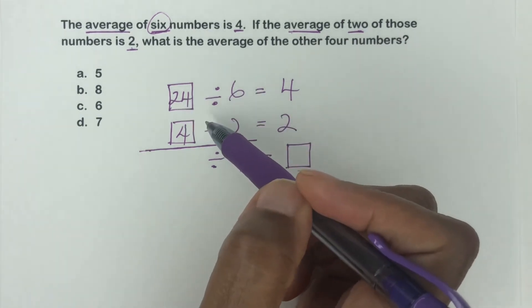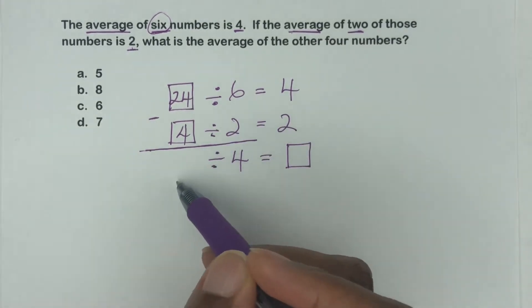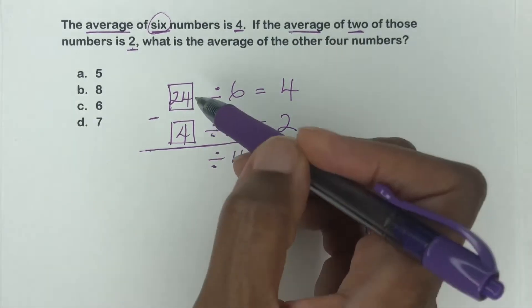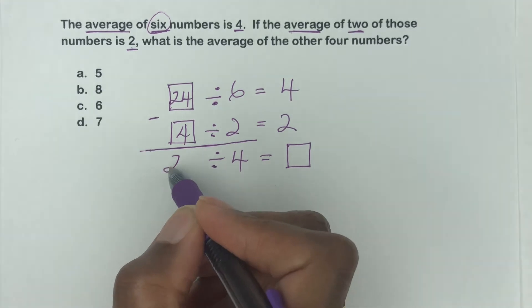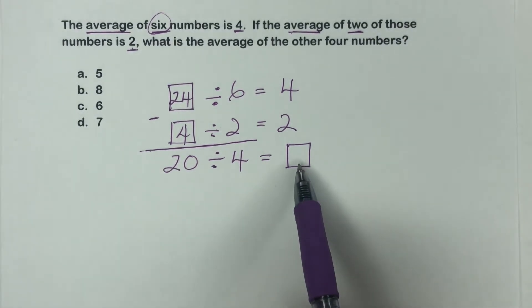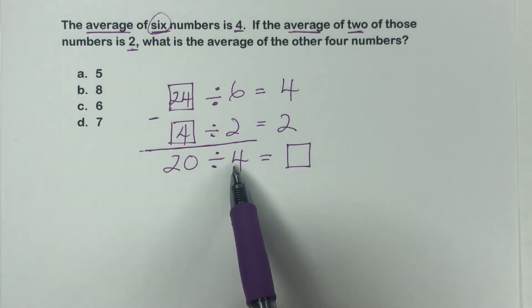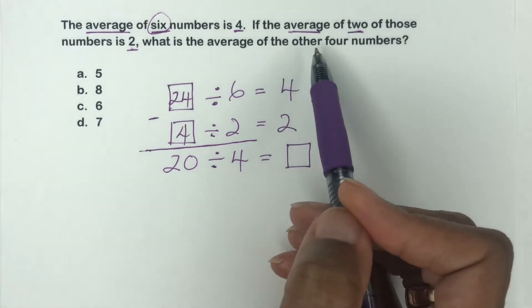So in other words, then six take away two is four. Then we need to do a takeaway here to find out what this number is here. So 24 take away four is to give us 20. Now, we can find this number. So what is the average of the other four numbers? The average of the other four numbers,